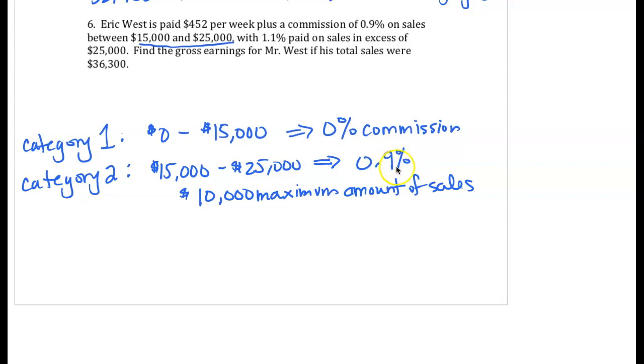Notice that that's below 1%. So it's going to be a small decimal. Category 3 is sales over in excess of $25,000. And that gets a commission rate of 1.1%.